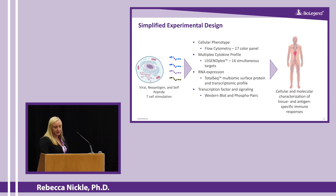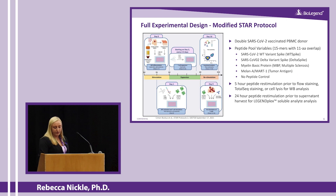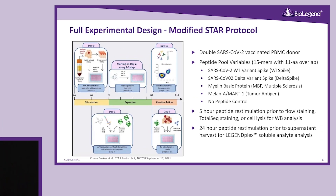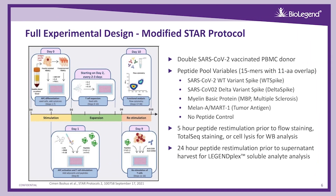To complete this work we first needed to work out the T cell stimulation side of the protocol. We used a star protocol by Boskis and others published this past year, showing how you can expand peptide-specific T cells and then characterize them. We modified it a little bit to fit our experiments. We took a double SARS-CoV-2 vaccinated donor who had not received their booster shot. We isolated PBMCs and stimulated them with GM-CSF, IL-4, and FLT-3 ligand to induce APC differentiation, then on the second day added LPS, R848, and IL-1 beta along with our peptide pools.